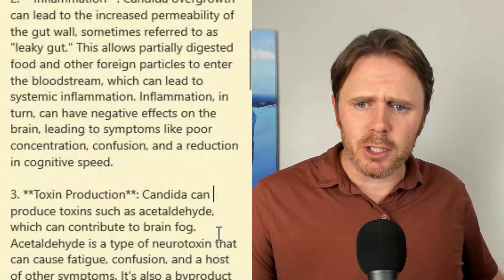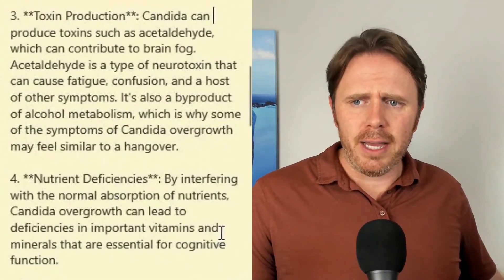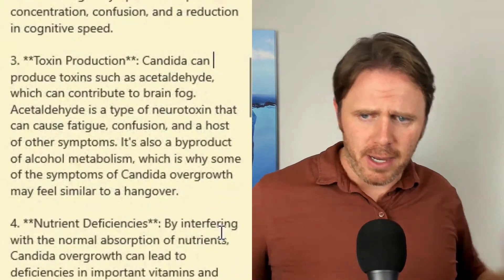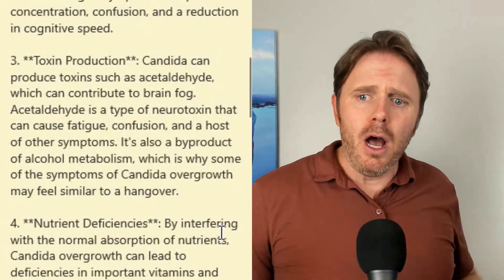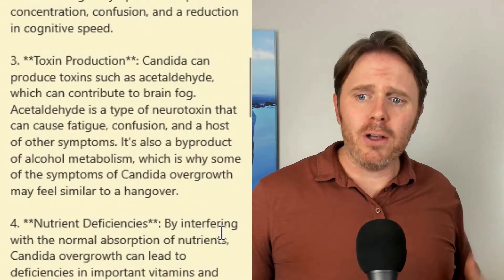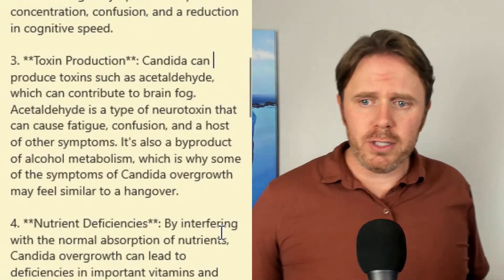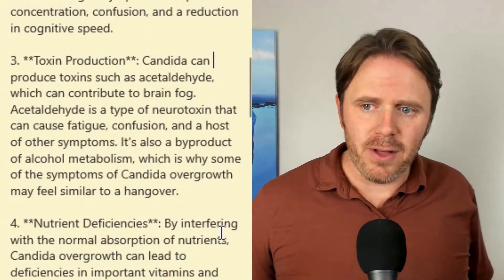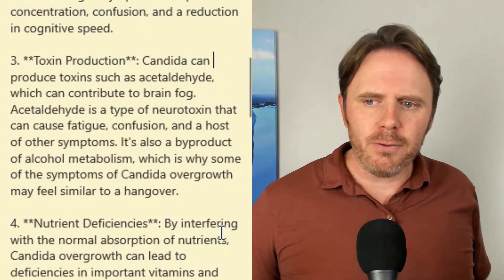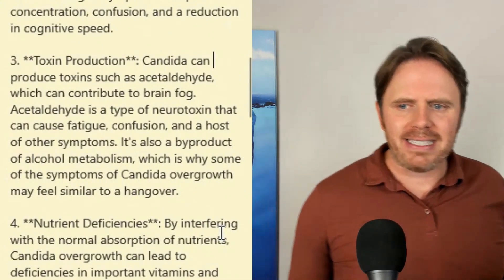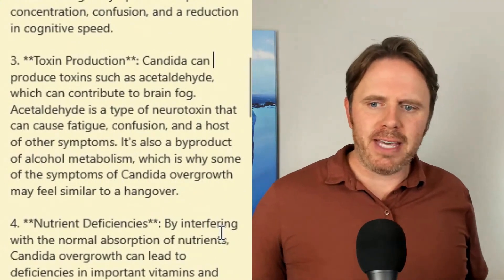Next is toxin production. We have acetaldehyde, which is a metabolite of Candida. You also get acetaldehyde with alcohol — when you consume alcohol, your body converts it to acetaldehyde. That's actually the stronger metabolite that your liver has to deal with. And you're going to have acetaldehyde as a byproduct of Candida as well.